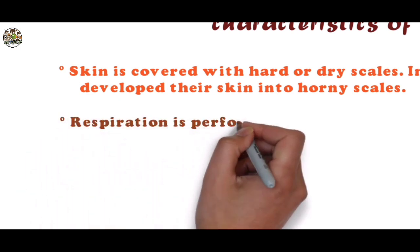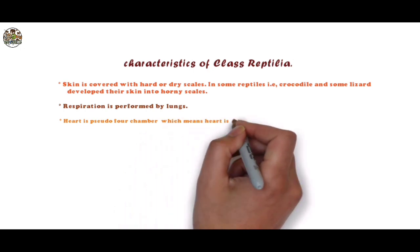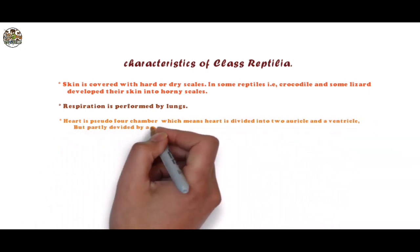Respiration is performed by lungs. Heart is pseudo four-chamber, which means the heart is divided into two auricles and a ventricle but partially divided by a septum.